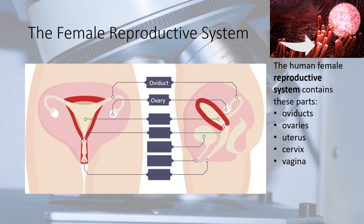The two ovaries contain hundreds of undeveloped female gametes — sex cells — called ova (one of them is called an ovum, from the Latin), or egg cells. Women have these cells in their bodies from birth, whereas men produce new sperm continually.